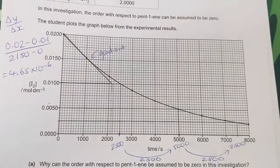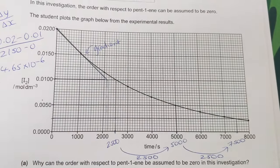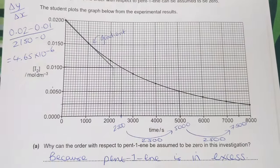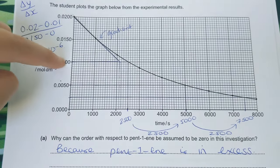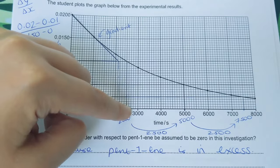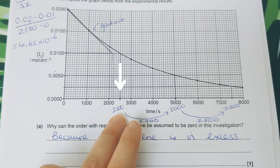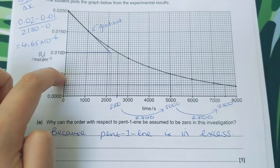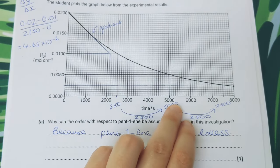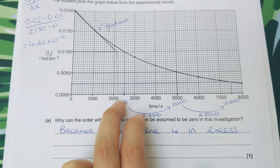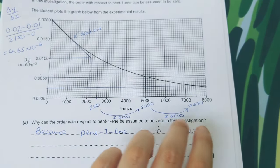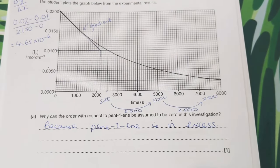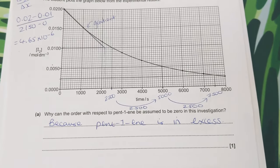To show the order of iodine, if we suspect it's first order from a concentration-time graph, we prove this by working out half-lives. Starting at concentration 0.02, halve it to 0.01, draw a line across to the curve and down to get the time. Halve again to 0.005 and repeat to get the next half-life. We get a constant half-life of 2,500 seconds, which indicates it is first order with respect to iodine.